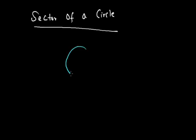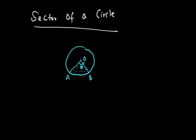Now, sector of a circle. This is a circle, center is O. It subtends angle theta at the center, so this is the sector A and B. The AB arc is the length of arc AB, and we will denote this length by L.